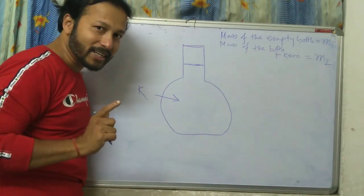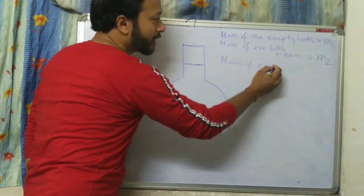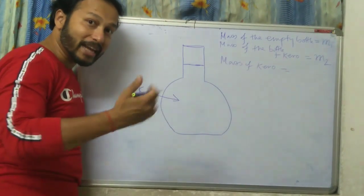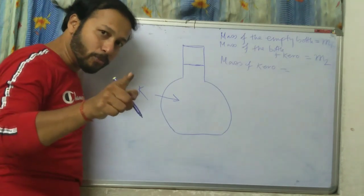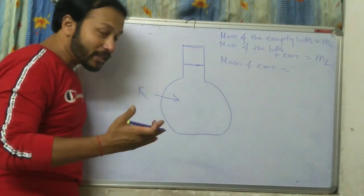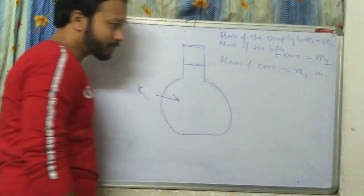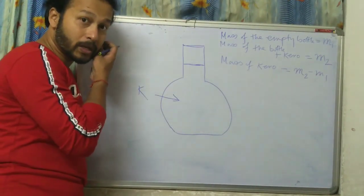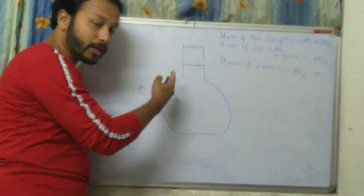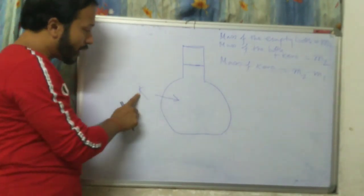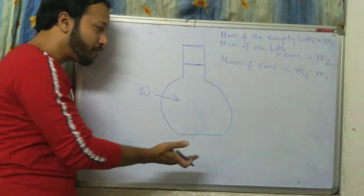The mass of kerosene alone equals M2 minus M1, because M2 is the total mass of bottle plus kerosene and M1 is the mass of only the bottle. Now empty the bottle and fill it with water.